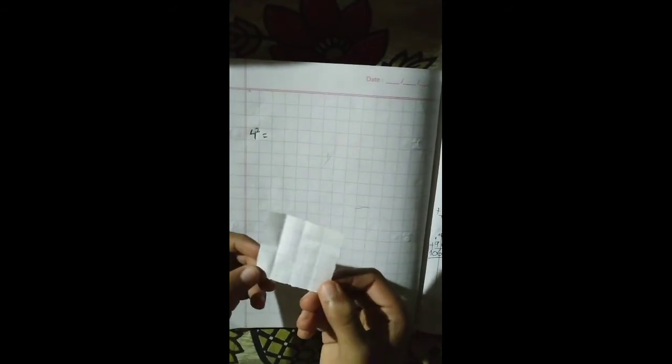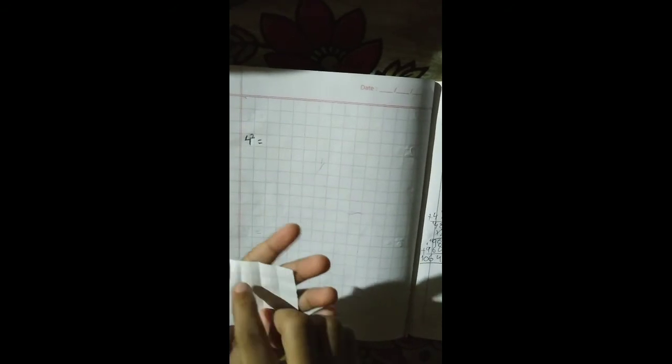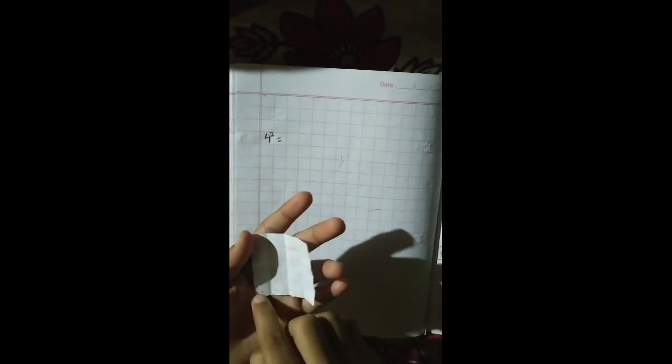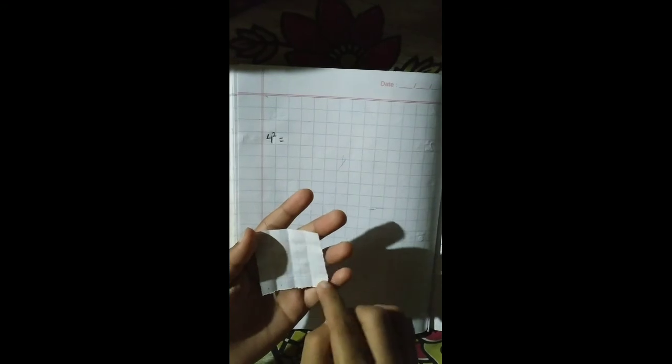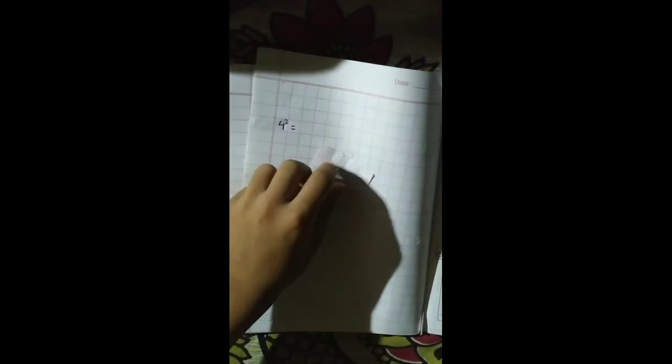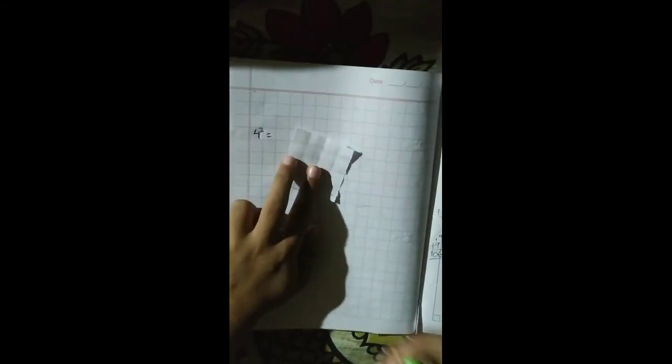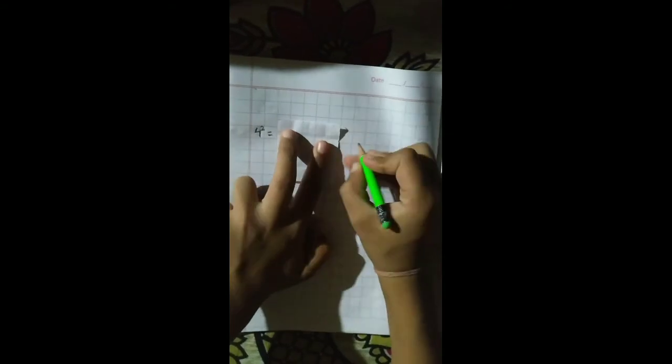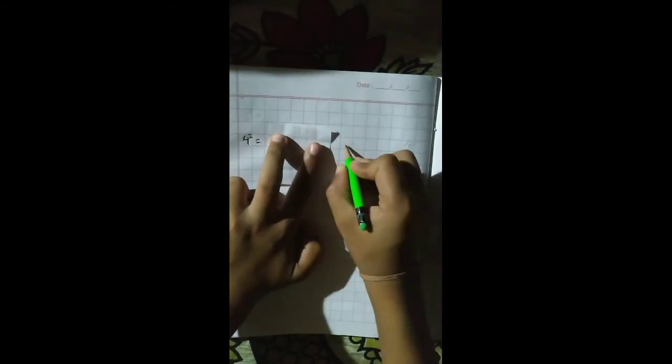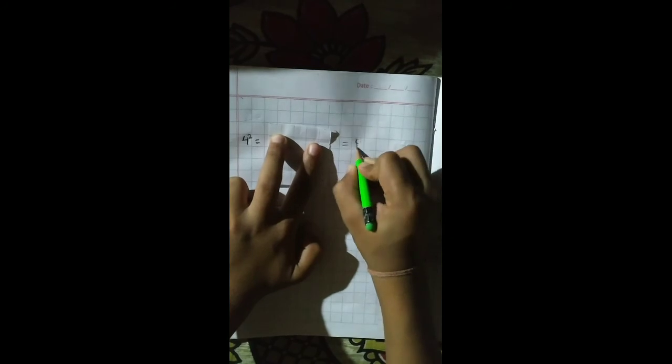Now we will unfold this and here we can see that there are 16 squares. 1, 2, 3, 4, 5, 6, 7, 8, 9, 10, 11, 12, 13, 14, 15, and 16. So this tells that the square of 4 is equal to 16.